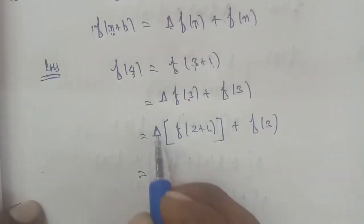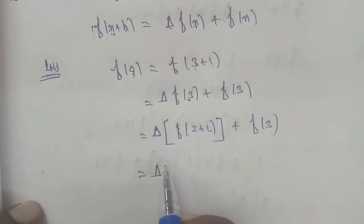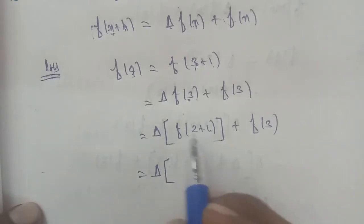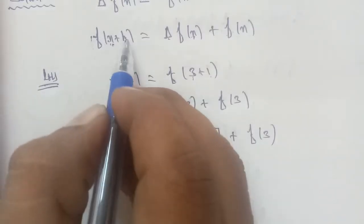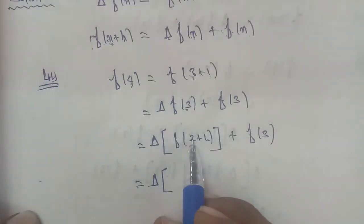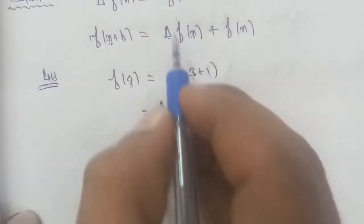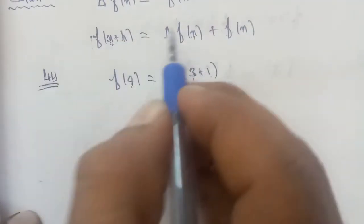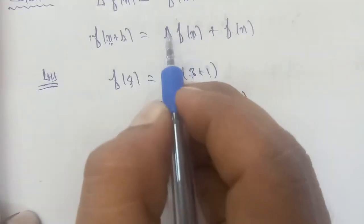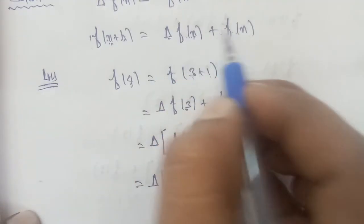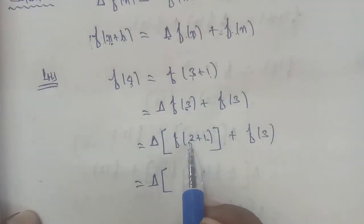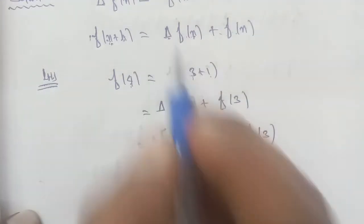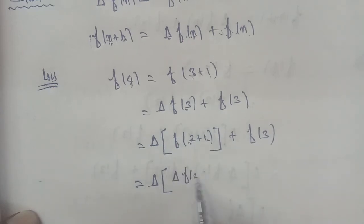Next, delta update. Open bracket. This is f(x+h) format — f(x+h) is the f(x+h) term, and f(x) is the f(x) term. Apply f(x) format. So f(x+h) minus f(x) gives Δf(x) plus f(x). With x equal to 2, we get Δf(2) plus f(2).